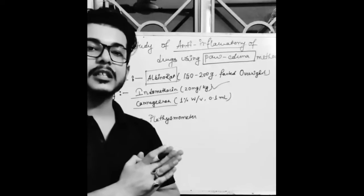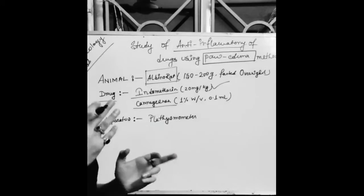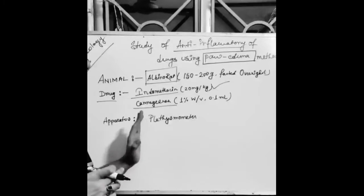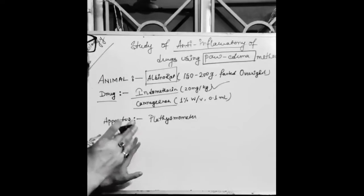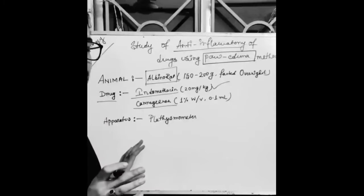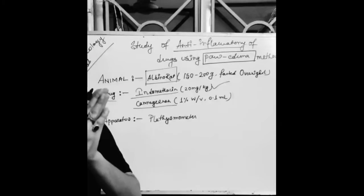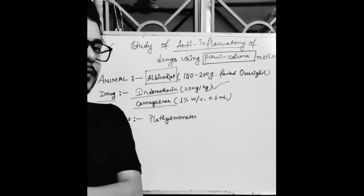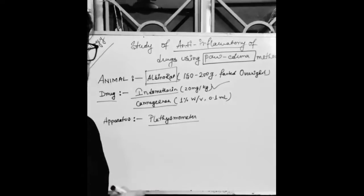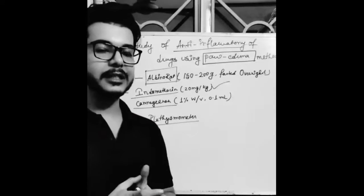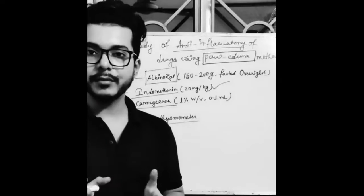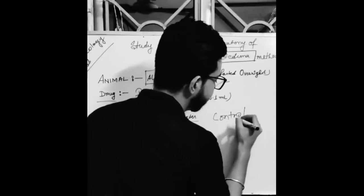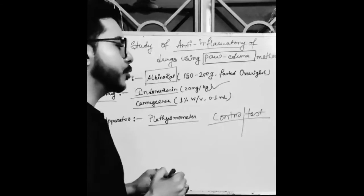So the whole method is: we will be developing the swelling and seeing whether our drug indomethacin has its anti-inflammatory effect or not. This apparatus is the plethysmometer — P-L-E-T-H-Y-S-M-O-M-E-T-E-R. A plethysmometer is an apparatus which helps in measurement of volume — body volume, whole body or any part of the body. Just like other animal experiments, we will be having two groups: one is the control group and another is the test group.